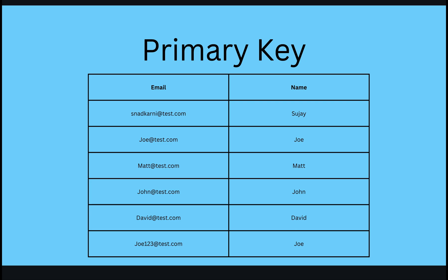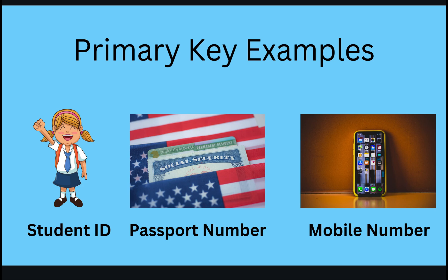For example, the same table can be represented using email as your primary key. Here we have six employees — Sujay, Joe, Matt, John, David, and Joe — and I can use their email addresses as the primary key, which will also help me to uniquely identify the employees.